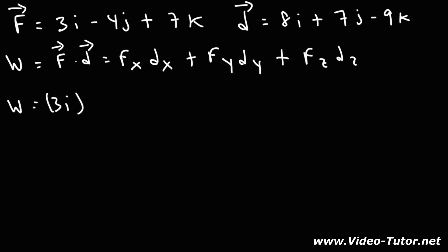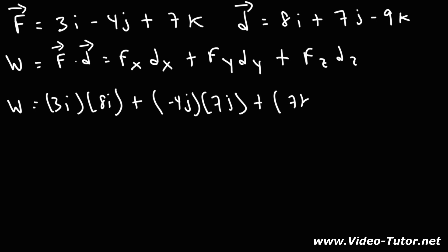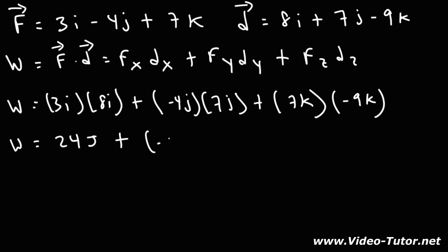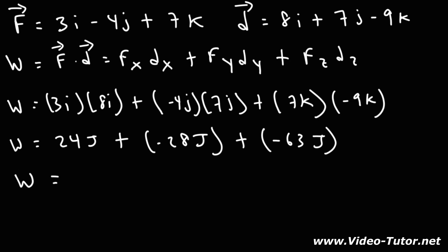So it's 3i times 8i, plus negative 4j times 7j, plus 7k times negative 9k. The dot product of each unit vector with itself is 1, so: 3 times 8 is 24, negative 4 times 7 is negative 28, and 7 times negative 9 is negative 63. Adding: 24 minus 28 is negative 4, and negative 4 minus 63 is negative 67 joules.